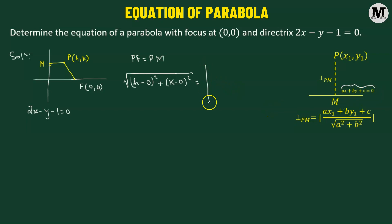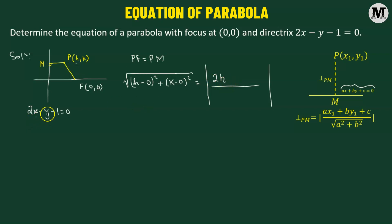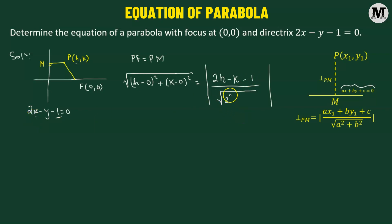Applying this formula to our case: the coefficient of x in the directrix line is 2, so that gives us 2h. The coefficient of y is negative 1, giving us negative k. The constant term is negative 1. So PM equals the absolute value of 2h minus k minus 1, divided by the square root of 2 squared plus negative 1 squared, which is the square root of 5.